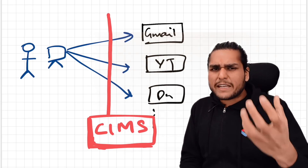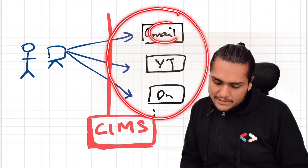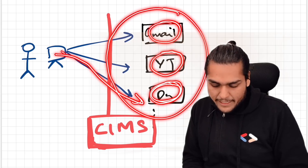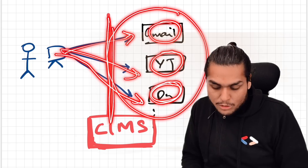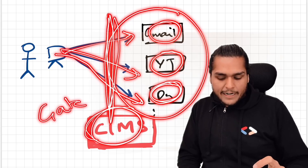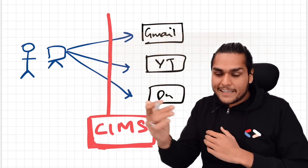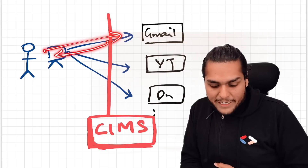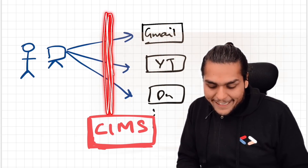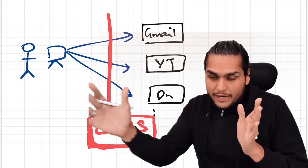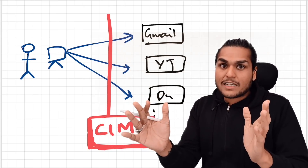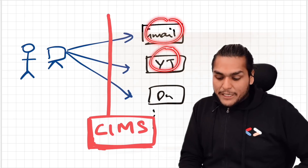To explain it simply: imagine this is your house with a bedroom, kitchen, and bathroom. Anybody who wants to access these rooms needs to pass through the main door, where there is a gatekeeper. If the gatekeeper gets drunk and cannot recognize you, he won't let you enter — resulting in an error. You can't reach your bedroom, bathroom, or kitchen without passing the gatekeeper. Similarly, CIMS acts as a gatekeeper before accessing any service that requires your login — be it YouTube, Google Drive, or Gmail.